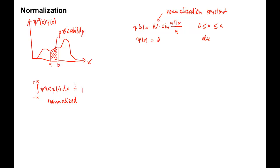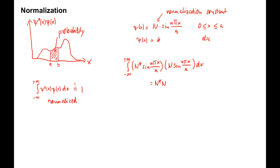Let's write down the normalization integral. It goes from negative infinity to plus infinity of N star sin(N pi x over a) times N times sin(N pi x over a) dx. This equals N star times N, and we can restrict the integral to the non-zero region of the wave function, so between 0 and a of sin squared(N pi x over a) dx. This must be equal to 1.